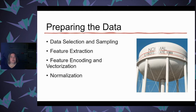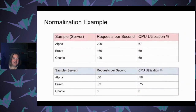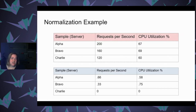Illinois literally has a town called Normal, which is about 50 miles away from me. Here's just an example of normalization — you're looking at your requests per second and your CPU, and you're basically transforming these to values between zero and one. This is just some of the things you have to do to process values for deep learning.